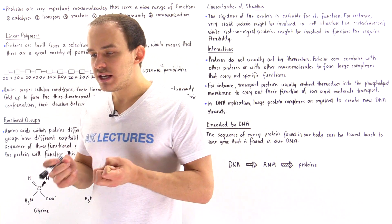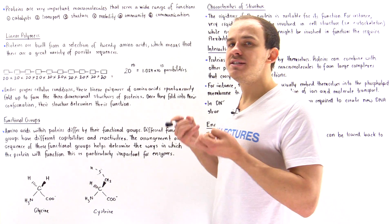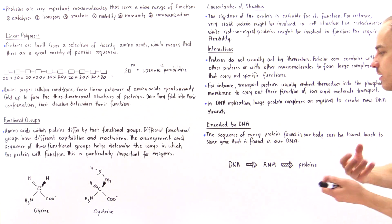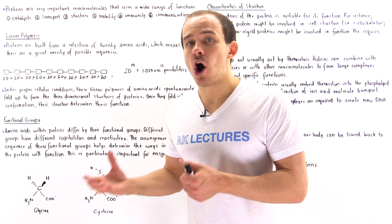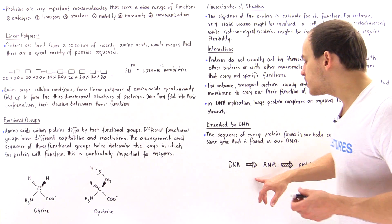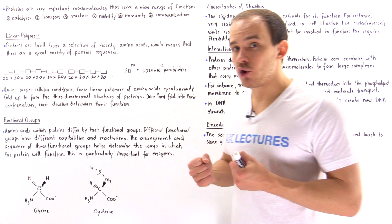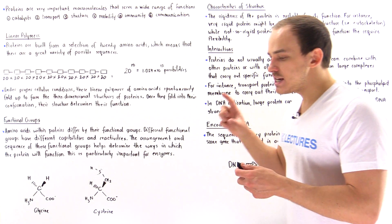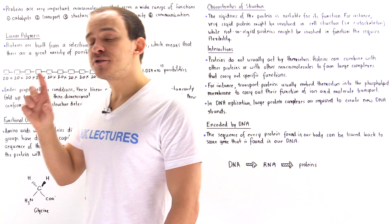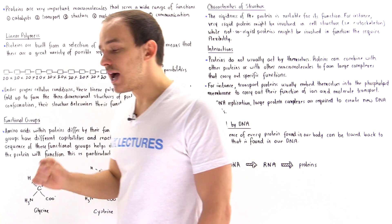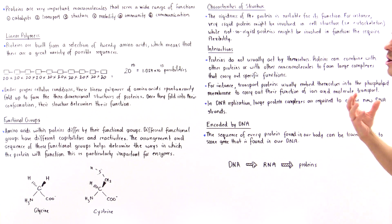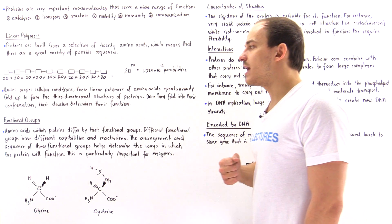Proteins are encoded by the DNA found inside our body. Our cells use DNA to create RNA, and then the RNA combines with ribosomes, which translate the RNA into proteins. Essentially, our DNA molecules contain specific genes — specific segments of nucleotides — that ultimately code for the many different types of proteins that are found and used by the cells of our body.